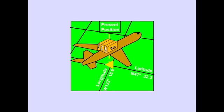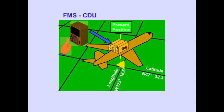Before the IRS can complete alignment, the airplane's present position must be entered. Present position is always described in degrees of latitude and longitude. Present position is entered through the FMS-CDU. This operation will be covered in flight management training.